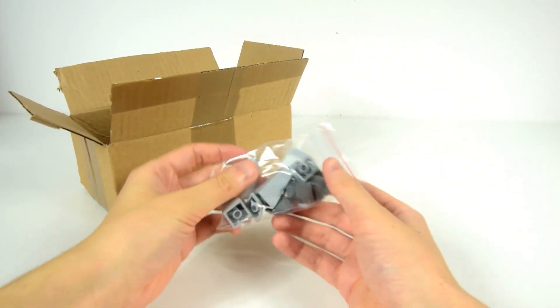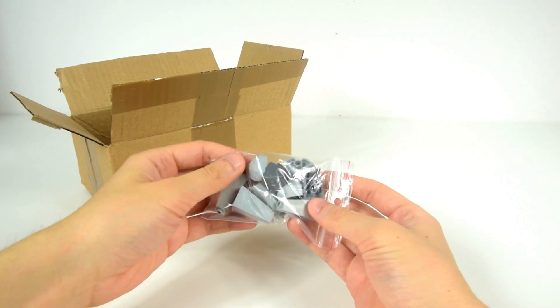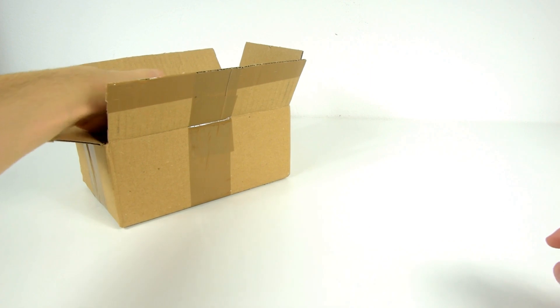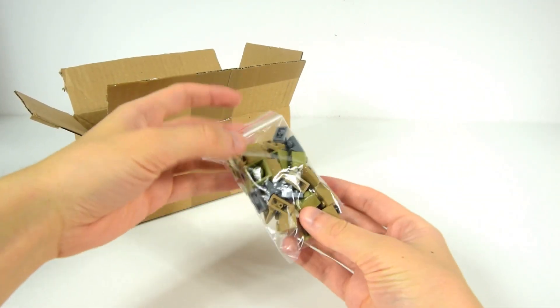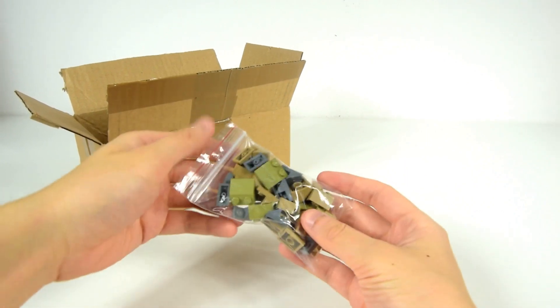Some taller and shorter 2x2 corner slope bricks in dark bluish grey and light bluish grey. Again, more slopes, this time 1x2 and 2x2 brick slopes in olive green color, dark bluish grey and dark tan.